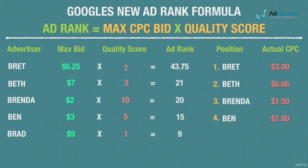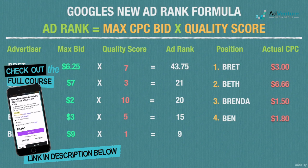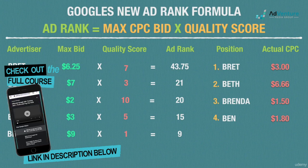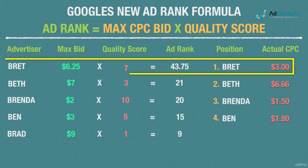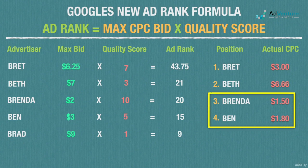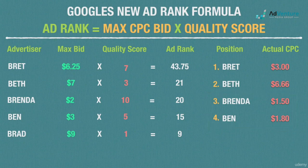If there were 5 ad slots and only these 5 advertisers, Brad would win the fifth spot but pay a minimum click price set by Google. Looking at the results, the number one spot isn't paying the most — Brett pays just $3 in position 1, more than half of what Beth pays in position 2, purely because of Brett's higher quality score.